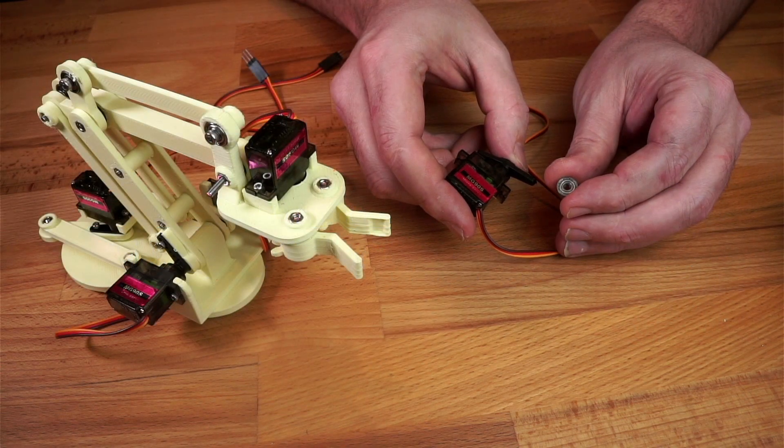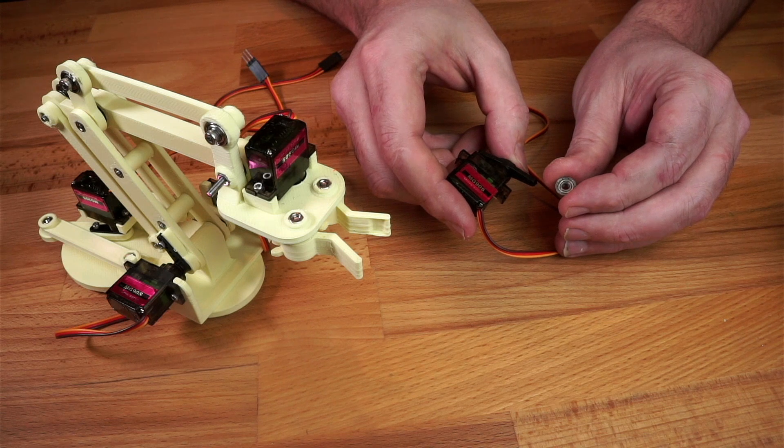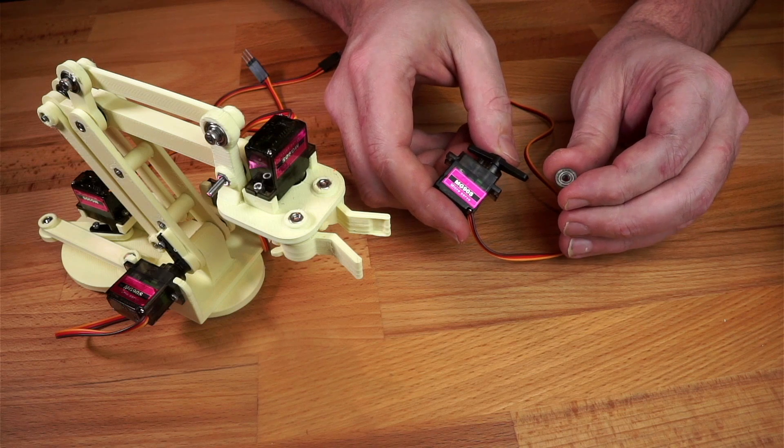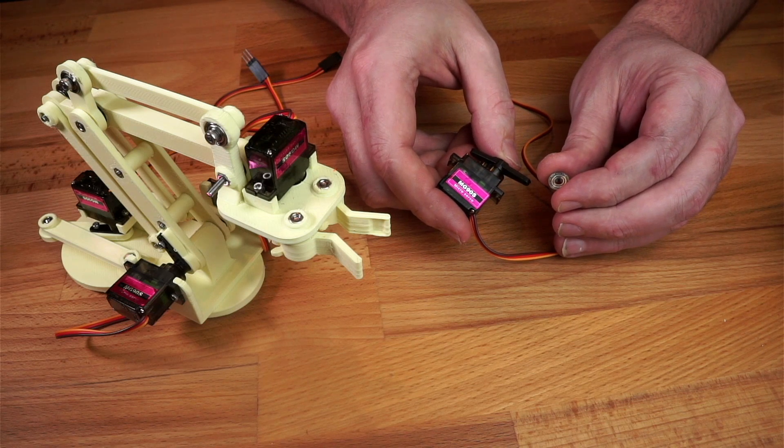We'll be using the robot arm I built in the last video in this series. Well, almost the same one. I've upgraded it since then with these new servos and these ball bearings, just to give it a smoother motion.